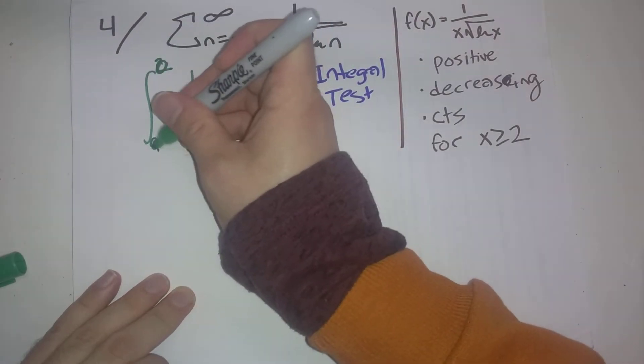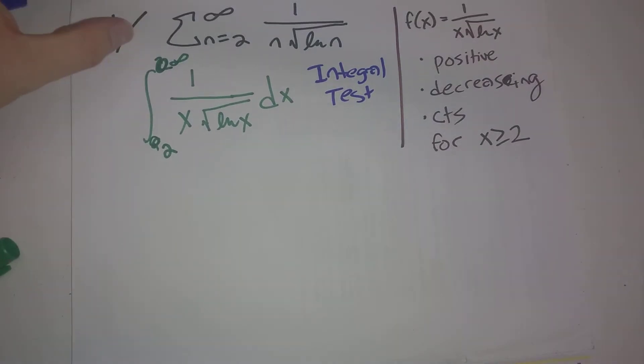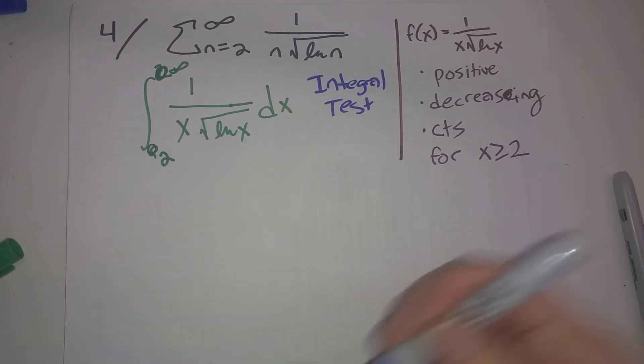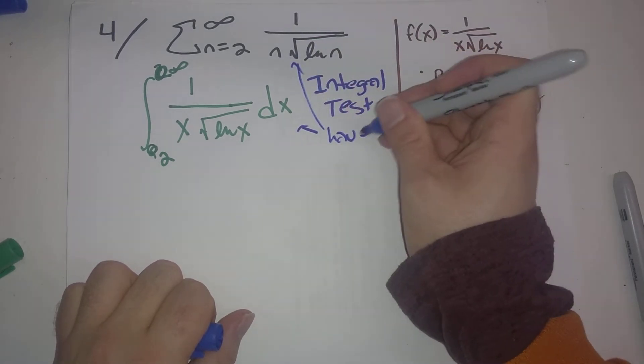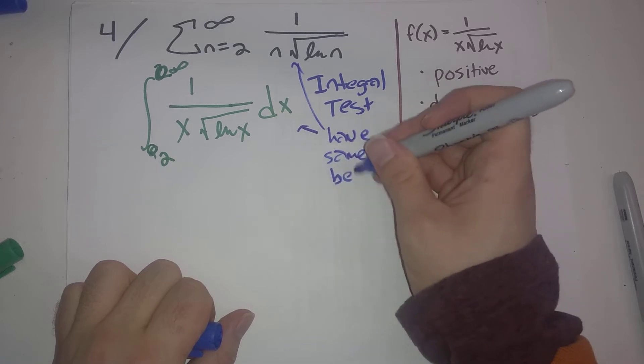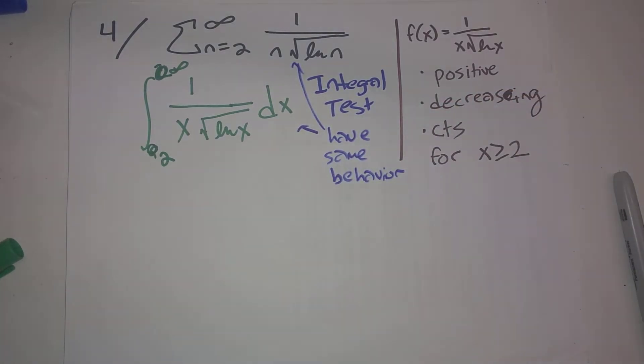this sum from 2 to infinity and this improper integral have the same behavior. What do I mean by that? I mean that they both converge or both diverge.